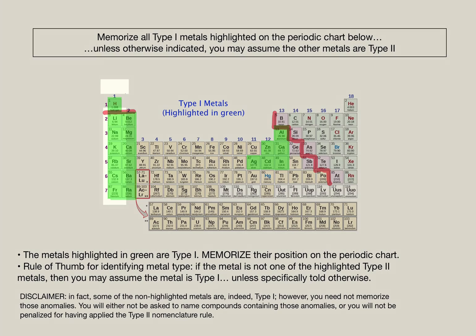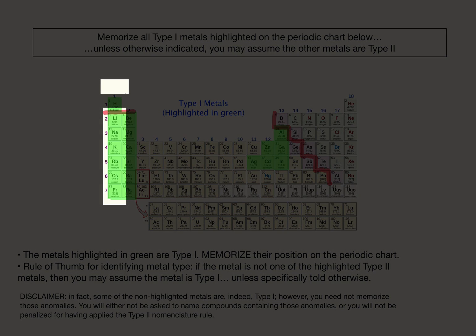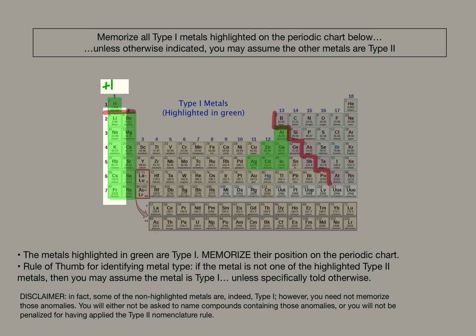All Group 1 metals are Type 1 metals. And they all happen to have a charge of plus 1. Easy enough. Group 1, Type 1, plus 1.